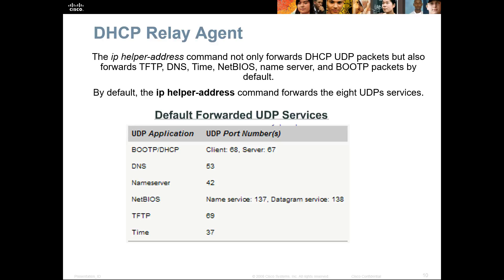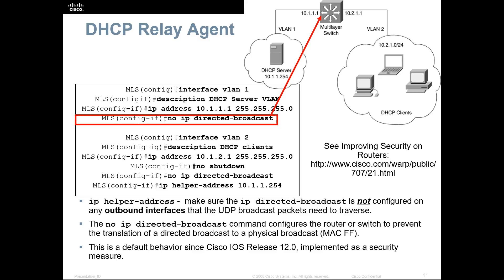It's always important to make sure you know the correct UDP ports. The 'no ip directed-broadcast' command configures the router or switch to prevent the translation of a directed broadcast to a physical broadcast. For example, a specific broadcast for the 10.2.1.0 network would be 10.2.1.255 — that way it's not using the global 255.255.255.255 broadcast, but rather a more specific one.